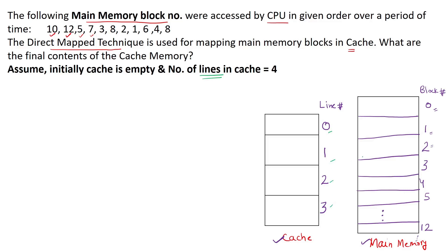In the direct map technique, block number 0 of main memory goes into line number 0, block 1 maps to line number 1, block 2 goes to line 2, and block 3 goes into line number 3 of the cache. After that, blocks 4, 5, 6, 7 wrap around starting from 0 — so the 4th block goes into line 0, the 5th into line 1, 6th into line 2, and 7th into line 3.